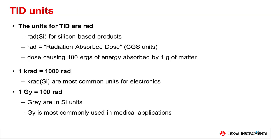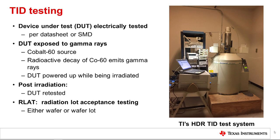KilRADs is the most common unit used for expressing radiation damage in electronics. RAD stands for radiation absorbed dose, in CGS units — a RAD is the amount of dose causing 100 ergs of energy to be absorbed in one gram of matter. One kilRAD equals 1,000 RAD. The medical community uses gray as radiation units in SI: one gray equals 100 RAD. Although the main source of TID in space is protons and electrons, the standard for TID testing uses gamma rays from a cobalt-60 source. To do the testing, the device under test (DUT) is electrically tested per the data sheet, powered up, and irradiated.